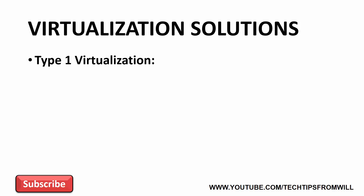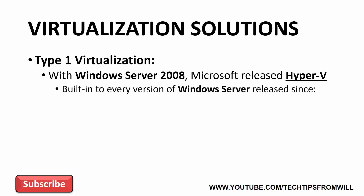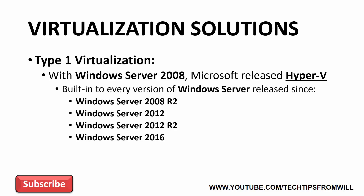Let's now look at Type 1 virtualization. With the release of Windows Server 2008, Microsoft released a newer virtualization solution called Hyper-V. Hyper-V originally made its debut as an optional download for Windows Server 2008 and has become built-in to every Windows Server operating system released since, including Windows Server 2008 R2, Windows Server 2012, Windows Server 2012 R2, and now Windows Server 2016. Unlike Microsoft Virtual Server and Microsoft Virtual PC, Hyper-V is a Type 1 virtualization solution.